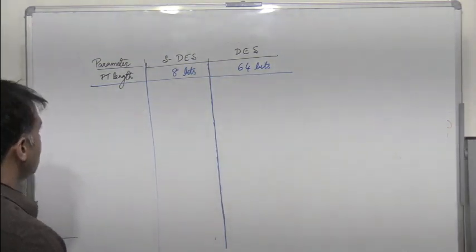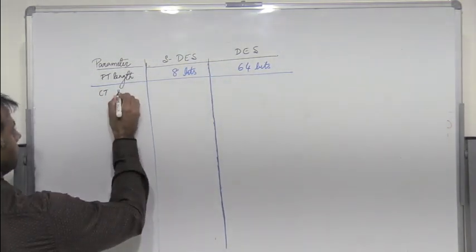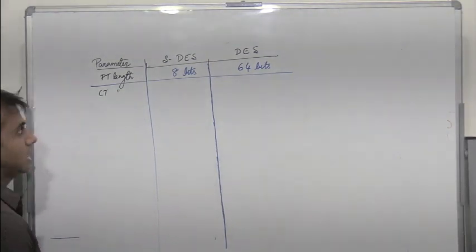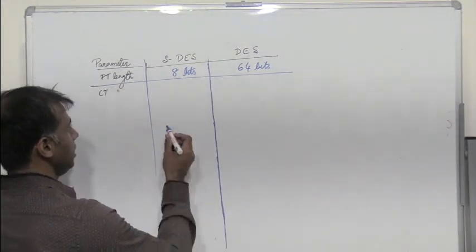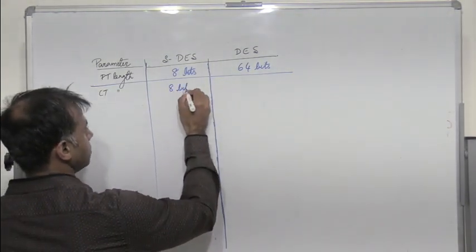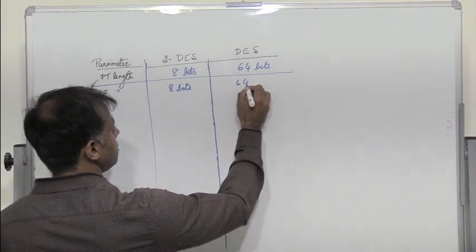Next we have the ciphertext length. The ciphertext length again is 8 bits in S-DES, and here it is 64 bits in DES.